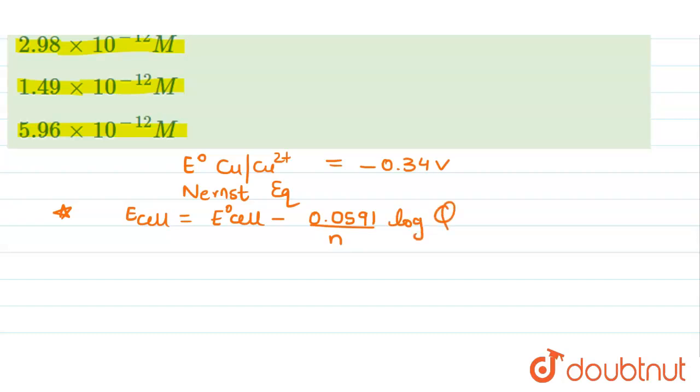minus 0.0591 upon N log of Q. For Q we'll write the equation: Cu converting into Cu2+ plus 2 electrons. So what is Q equal to? Q is equal to concentration of Cu2+. Why we don't write copper? Because this is in solid form. So for solid we take it as 1.